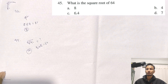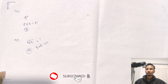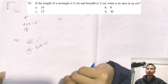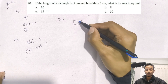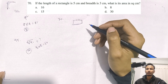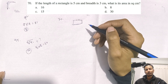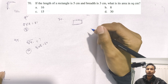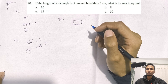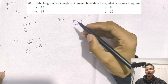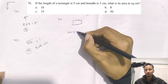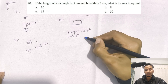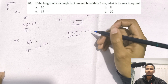Now we are going to take the technique for question number 70. If the length of a rectangle is 5 and its breadth is 3, what is its area in square centimeters? The formula is: area of a rectangle equals length times breadth.